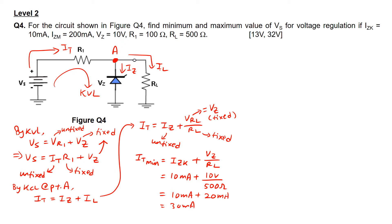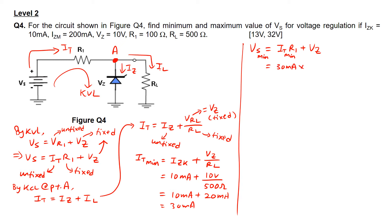From It_min equals 30 mA, we put this value back into the KVL equation. The KVL equation is Vs equals It times R1 plus Vz. Since It is at its minimum value and both R1 and Vz are fixed, the calculated Vs is also a minimum value. Therefore Vs_min equals 30 mA multiplied by 100 ohms plus 10 volts, which gives 3 volts plus 10 volts — so Vs_min equals 13 volts.